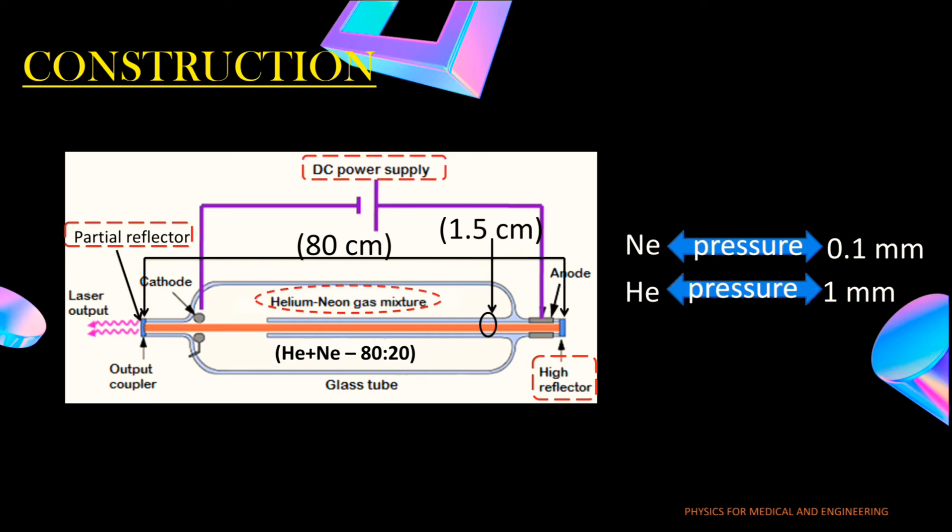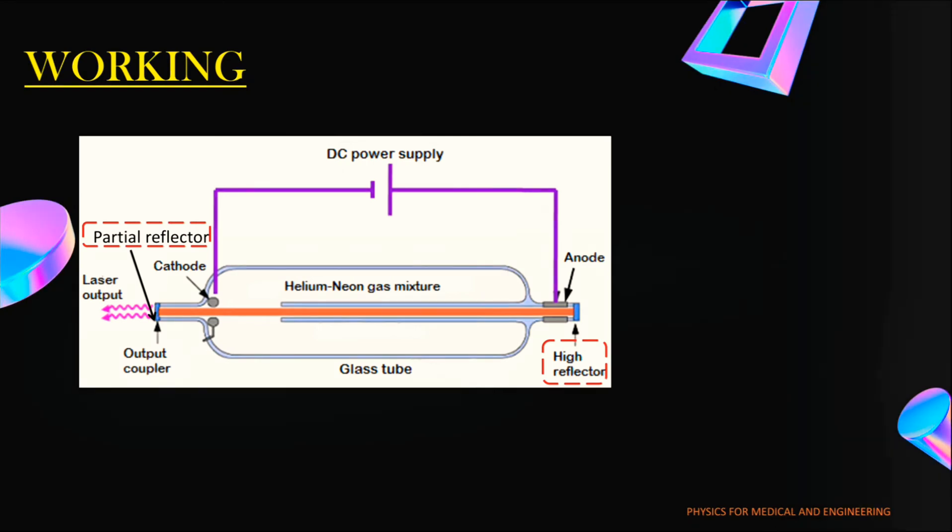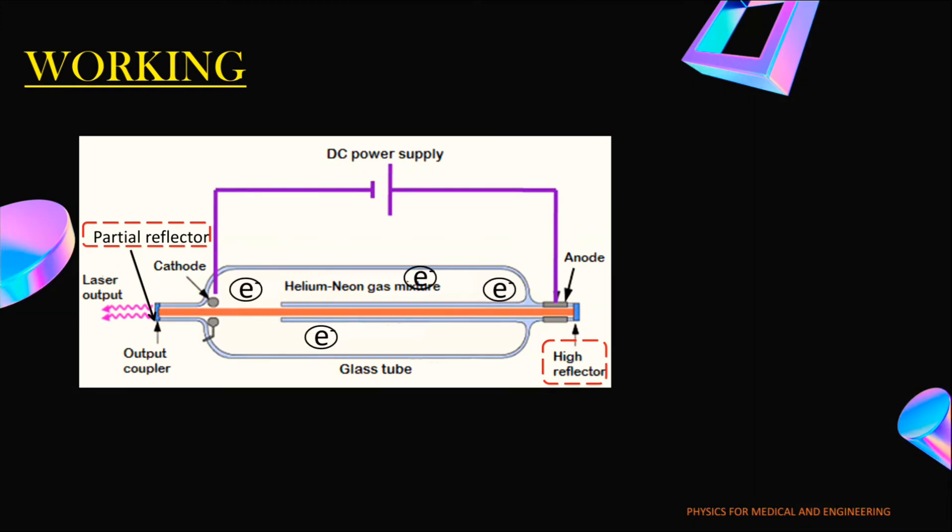Now let's see how helium neon laser works. When the power is switched on, a high voltage of about 10 kilovolt is applied across the gas mixture. This power is enough to excite the electrons in the gas mixture. The electrons produced in the process of discharge are accelerated between the electrodes, that is cathode and anode, through the gas mixture.